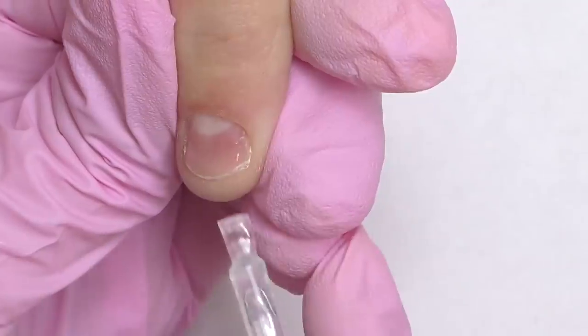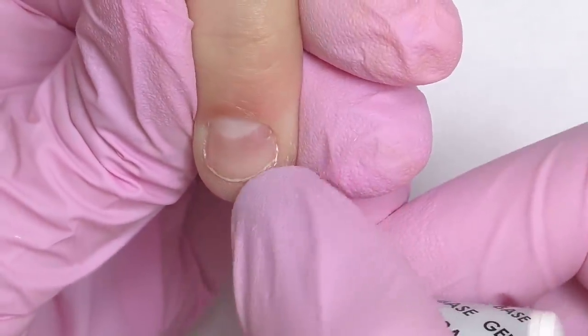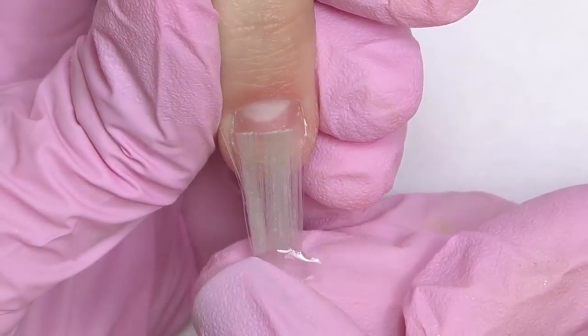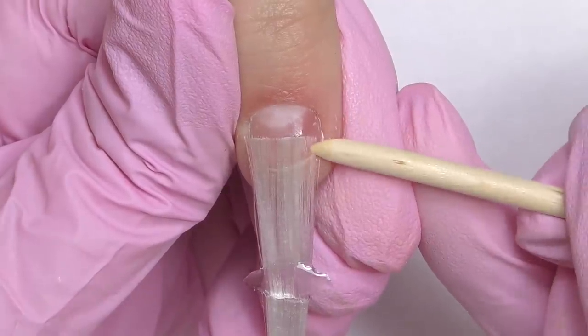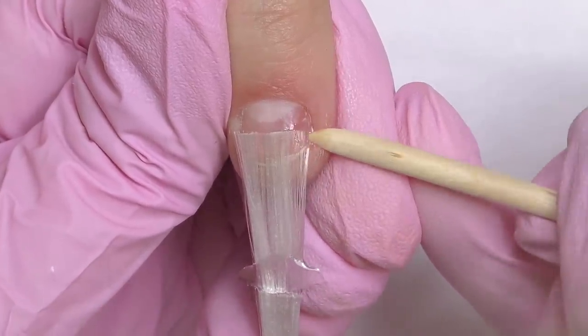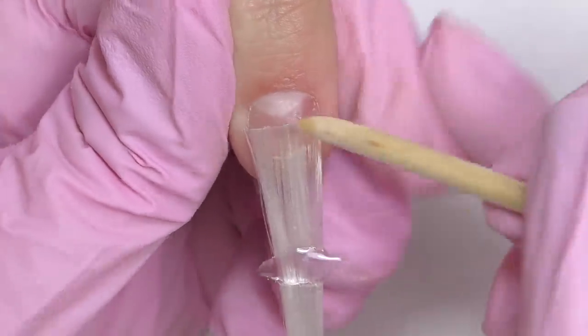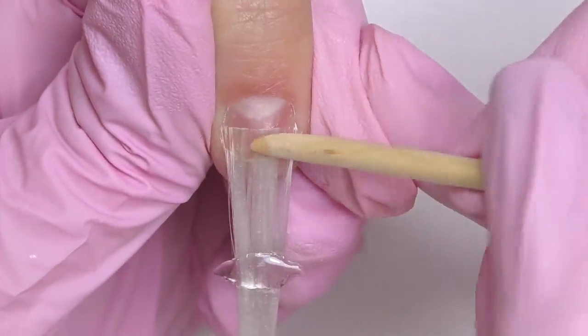Really close to the cuticle and near the cuticle the product should be thin. So I'm afraid we might end up with the strands shining through the product so we do not want that. So on this nail I'm going to fix it and once again apply it only on the free edge.